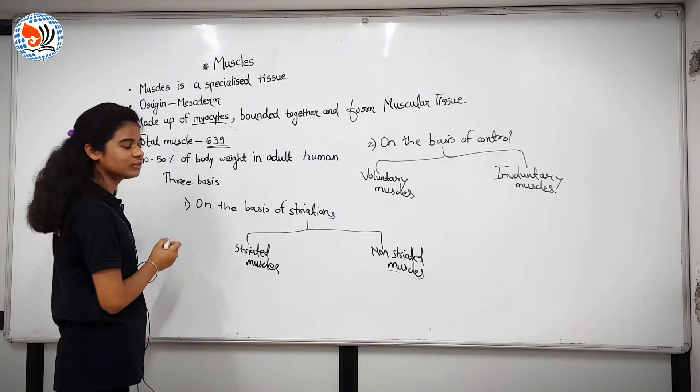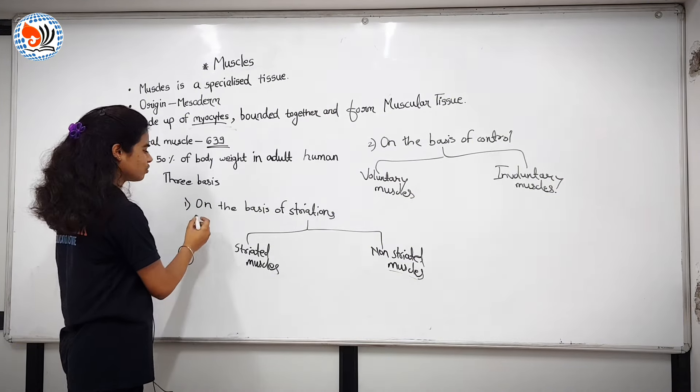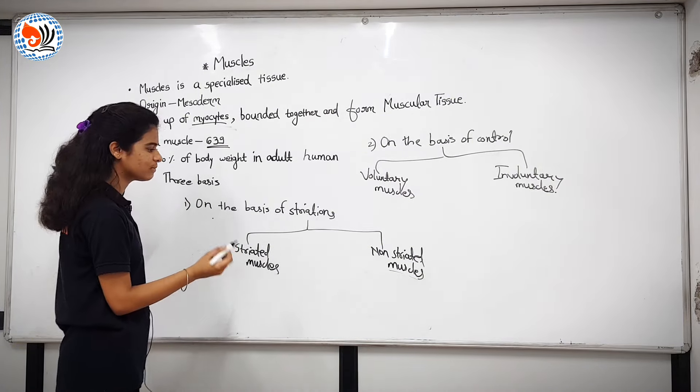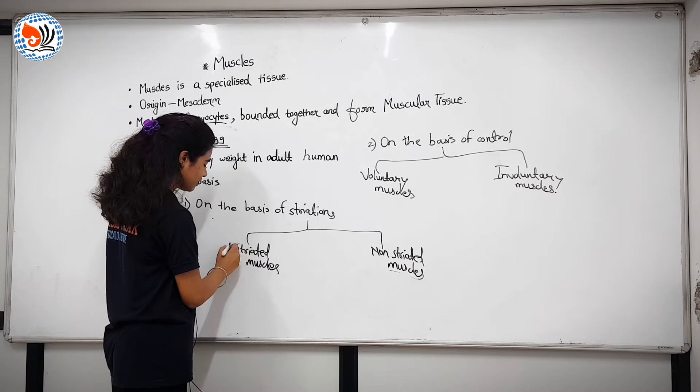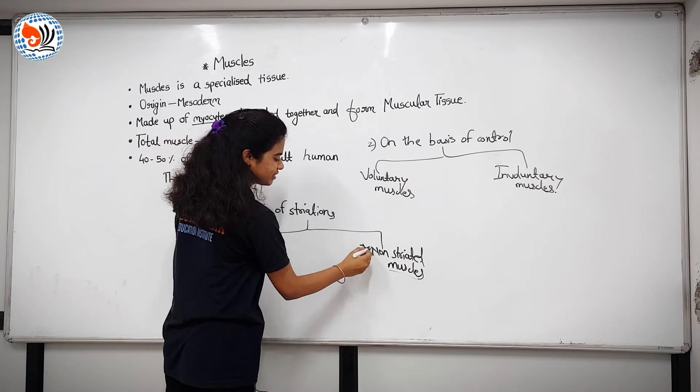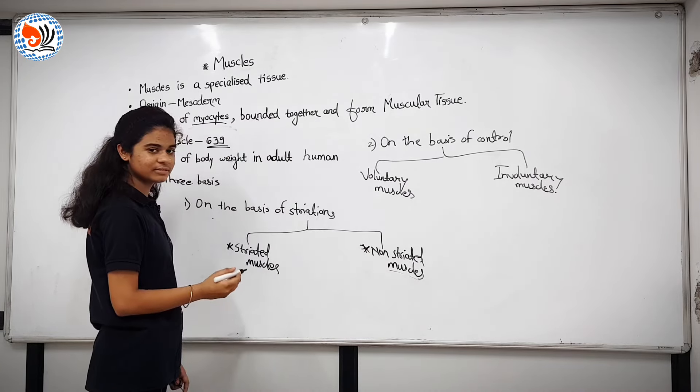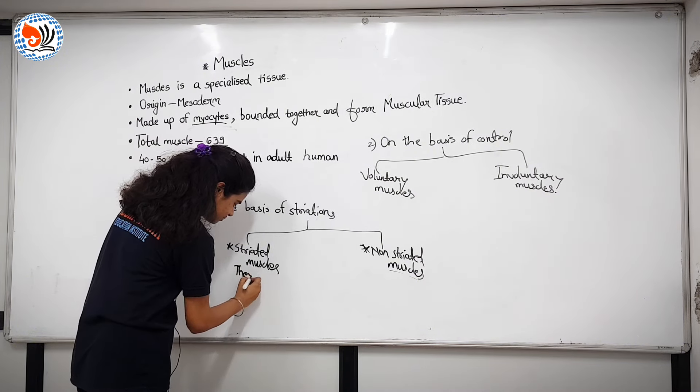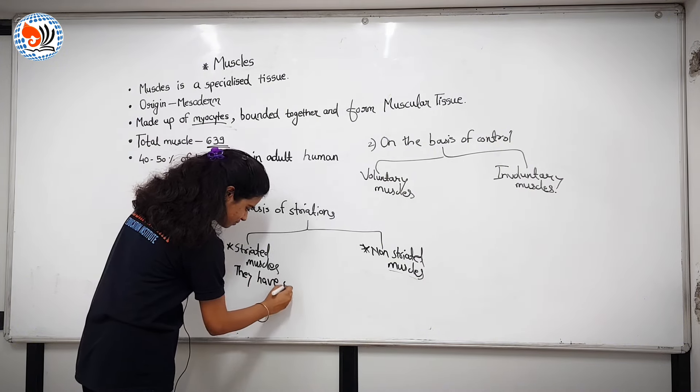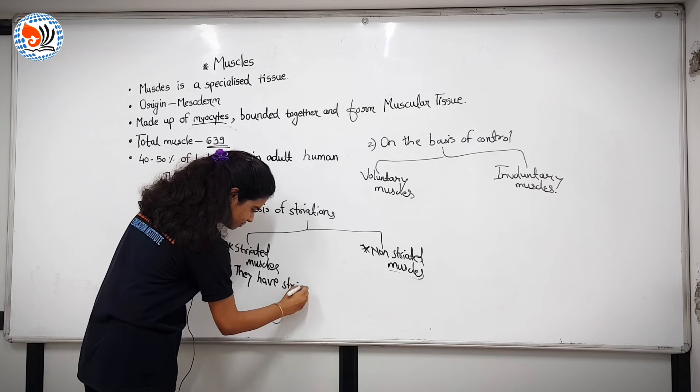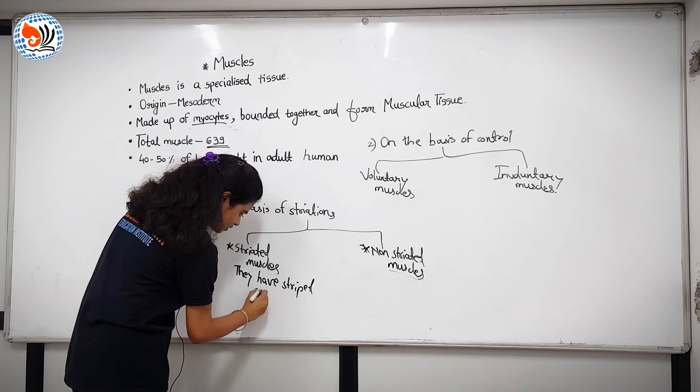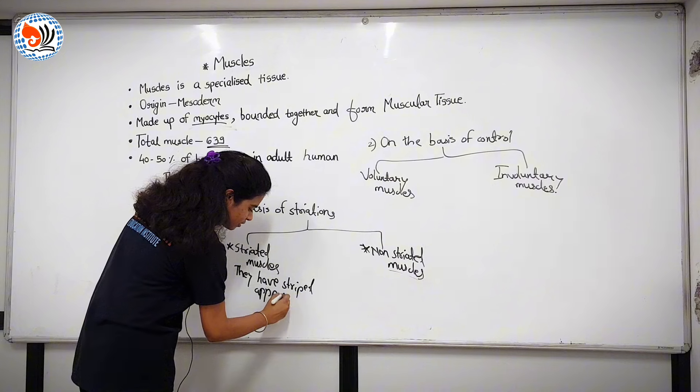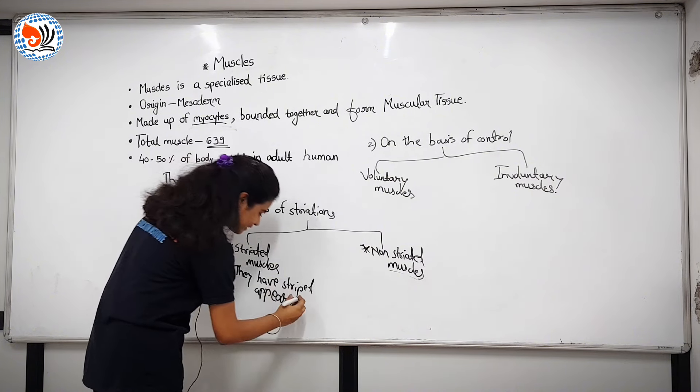We have classified muscles on three basis. First, on the basis of striations. On the basis of striations, there are two types: striated muscles and non-striated muscles. Striated muscles are the muscles which have striped appearance, means they show the presence of light and dark bands.